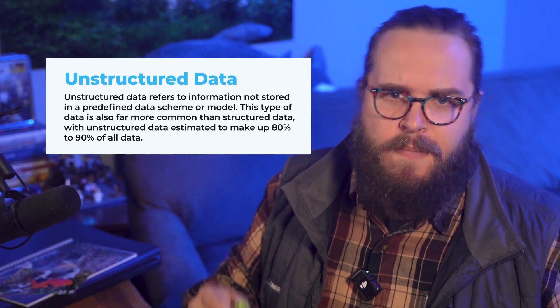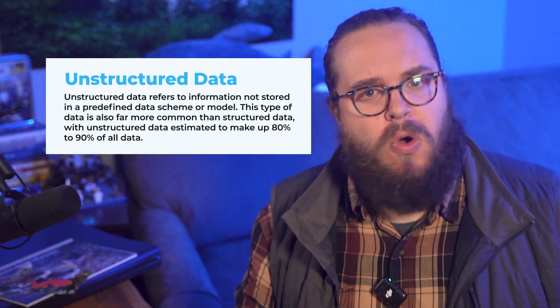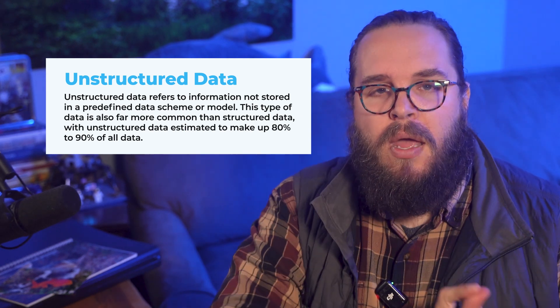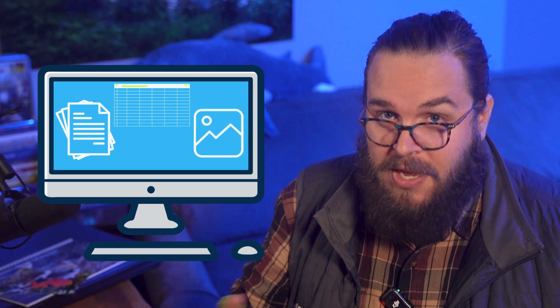Before we talk about how to protect unstructured data, we first need to define it. Unstructured data is defined as information not stored in a predefined data scheme or model. Basically, unstructured data is anything that a computer doesn't intrinsically understand where to find — it's all the stuff that gets stored in a random place on your endpoints, like documents, spreadsheets, or images.